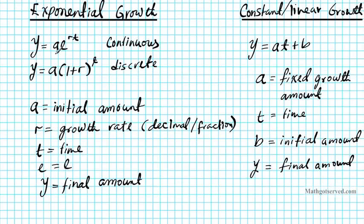Another variation of this continuous growth function that you can see in some textbooks is basically A equals Pe to the rt, where P is the initial amount or principal. The final amount is A, and r and t are the same as before.